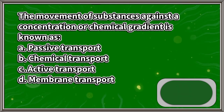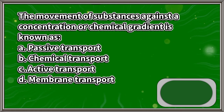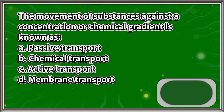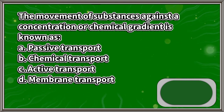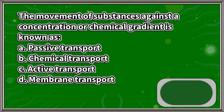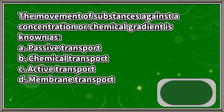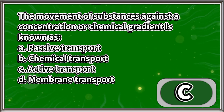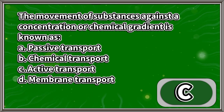The movement of substances against a concentration or chemical gradient is known as: A. Passive transport, B. Chemical transport, C. Active transport, D. Membrane transport. The answer is letter C.